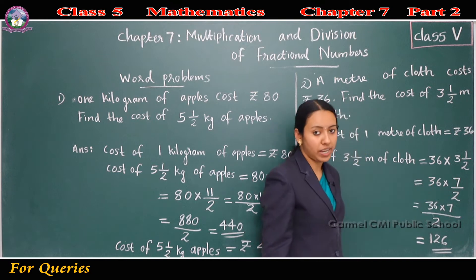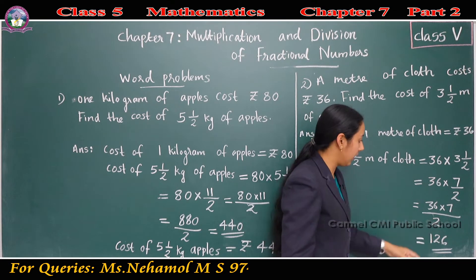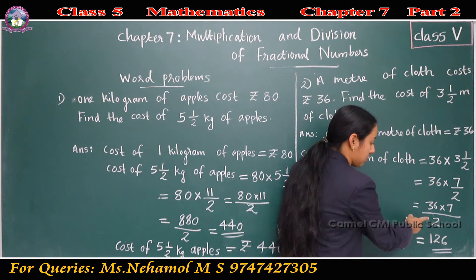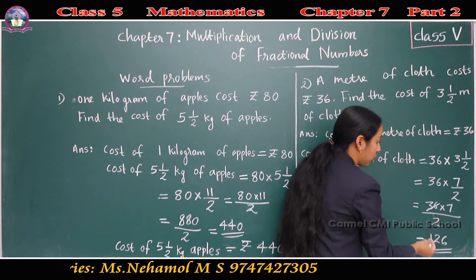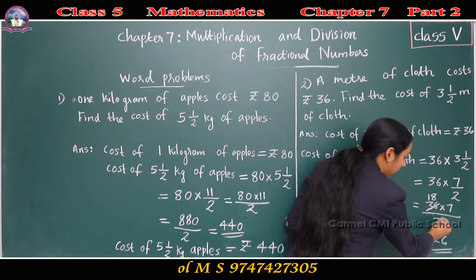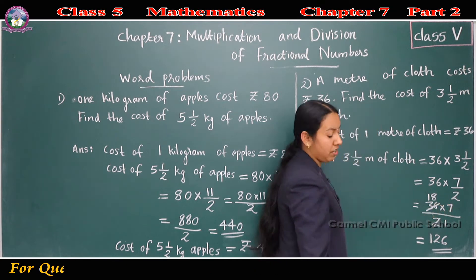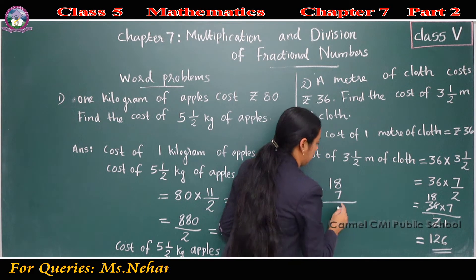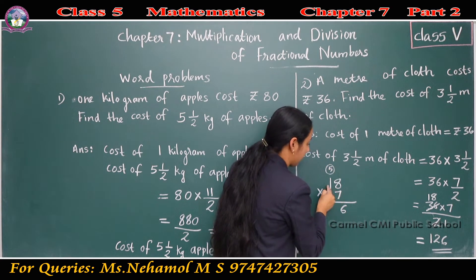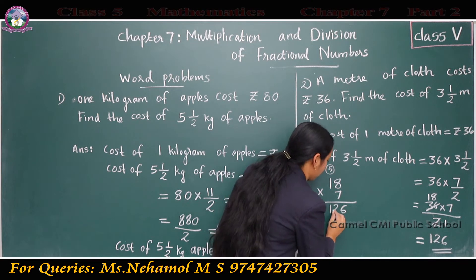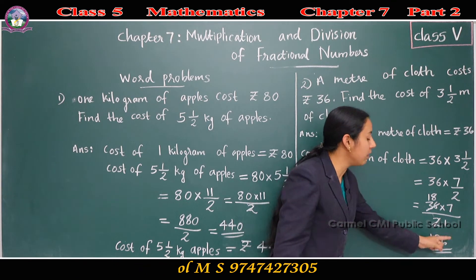36 into 7/2. That is 36 into 7, all divided by 2. We know 36 is divisible by 2: 36 by 2 is 18, and 2 by 2 is 1. So what remains is 18 into 7. 8 sevens are 56, carry 5. 1 seven is 7, plus 5 is 12. So 18 into 7 is 126. The answer is rupees 126.